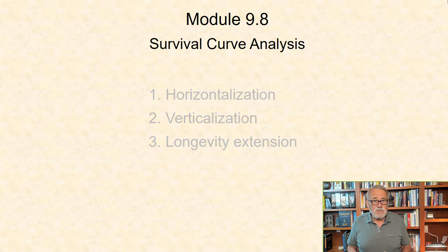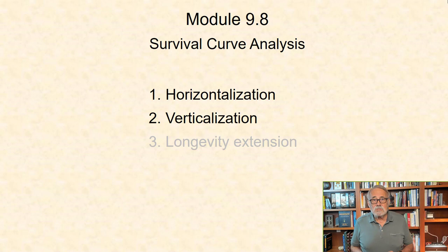French demographer Jean-Marie Robine and his colleagues introduced the concept of three dimensions of the survival curve. First, horizontalization, which corresponds to how long a cohort and how many survivors can live before aging-related deaths significantly decrease the proportion of survivors.